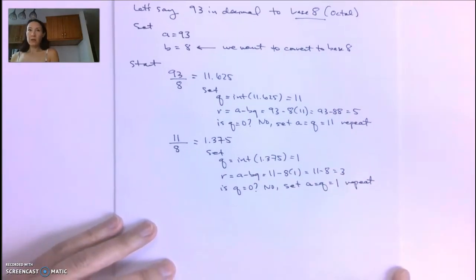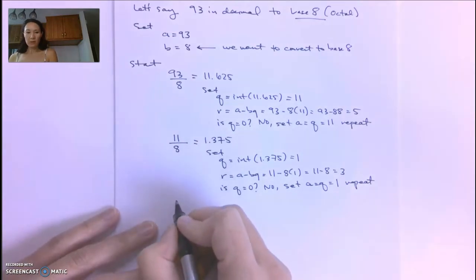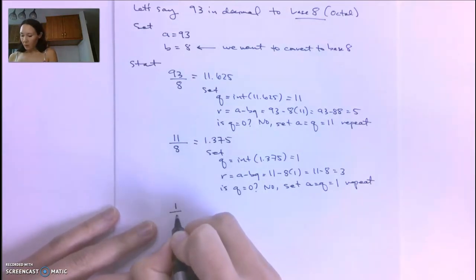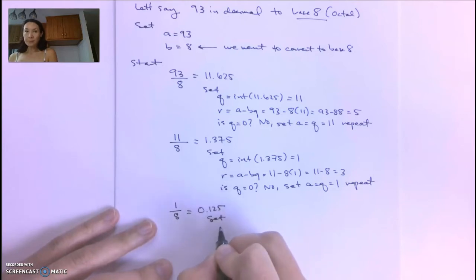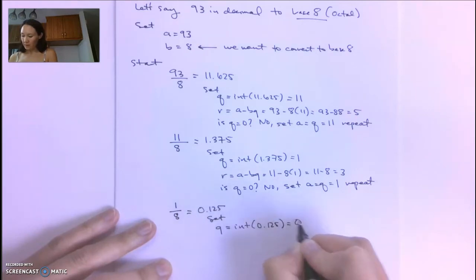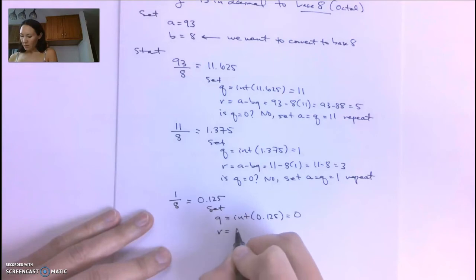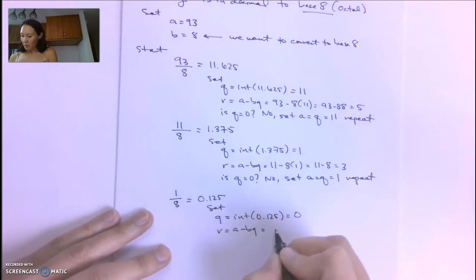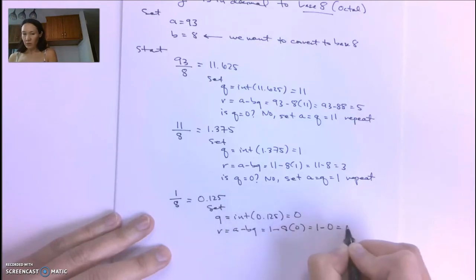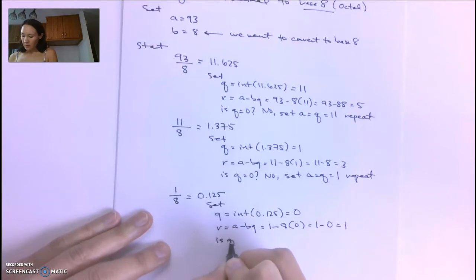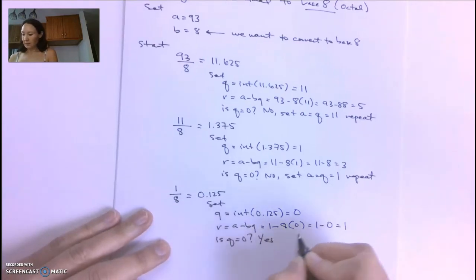We repeat this iterative process until Q equals 0. Our next step is to take that 1 and divide by 8, which gives us 0.125. We set Q equal to the integer part of 0.125, which is 0. We set R to A minus BQ, which is 1 minus 8 times 0, or 1 minus 0, which equals 1. Now is Q equal to 0? Yes. So we stop iterating.